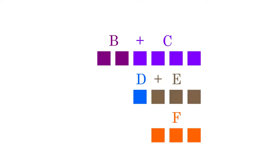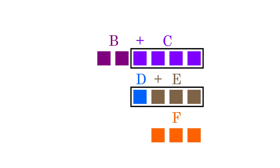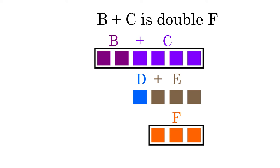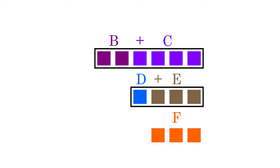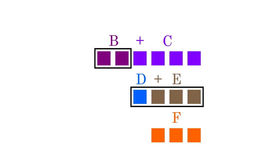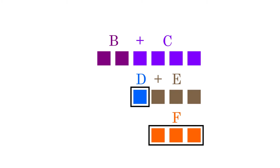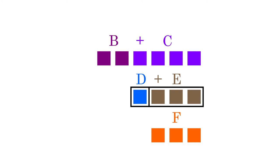Let b plus c be a hemiolic of d plus e, and let d plus e be an epitritic of f. Let e be equal to f and c equal to d plus e. This proposition asserts that b plus c is the duple of f. Since b plus c is a hemiolic of d plus e, and since c is equal to d plus e, it follows that b is one third of b plus c, and thus b is half of d plus e. Since d plus e is an epitritic of f and f is equal to e, it follows that d is a quarter of d plus e, and thus d is a third of f. Since d is a quarter of d plus e, and b is a half of d plus e, it follows that d is a half of b.